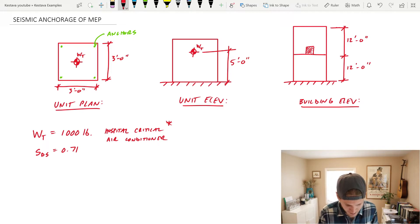For this example, a mechanical unit. We have the unit plan view, so it's three by three in plan. There's four anchor points at its base. I'll make it more clear here, so they're down here in green.